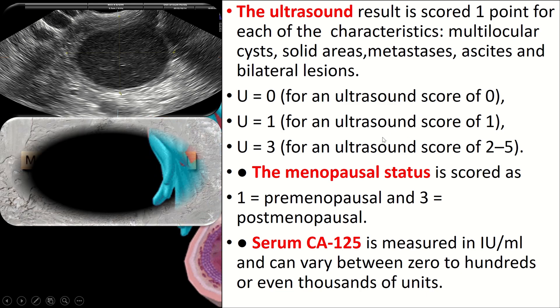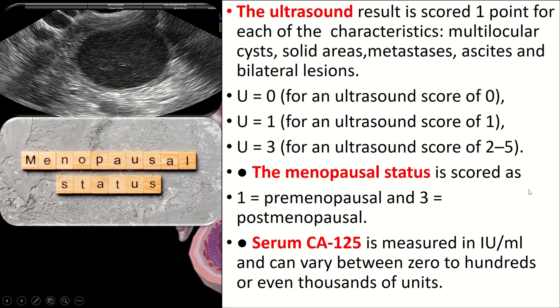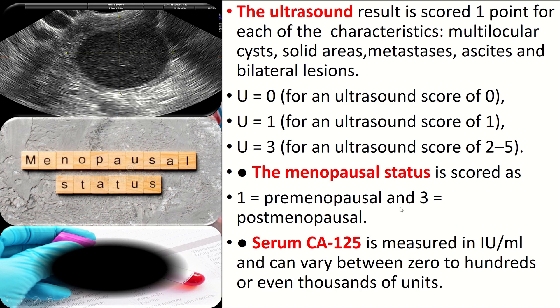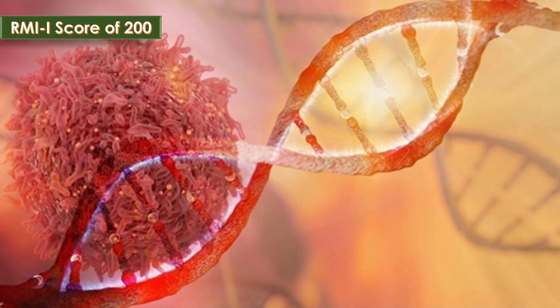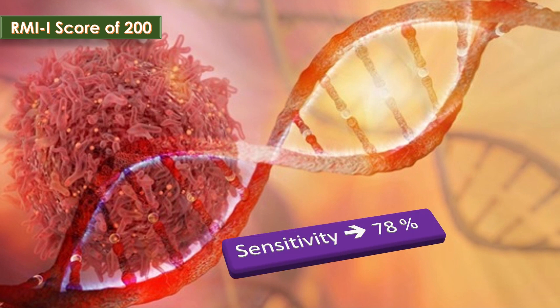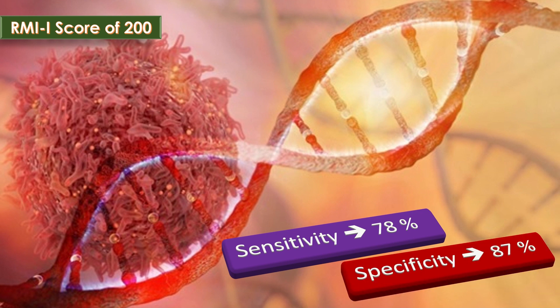The menopausal status is scored as 1 for premenopausal and 3 for postmenopausal. CA-125 is measured in international units per ml and can vary between 0 to hundreds or even thousands of units.